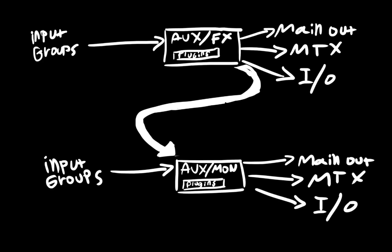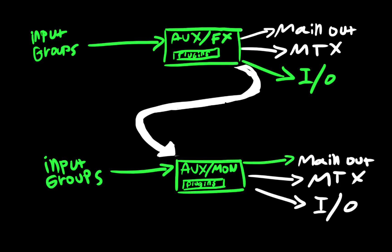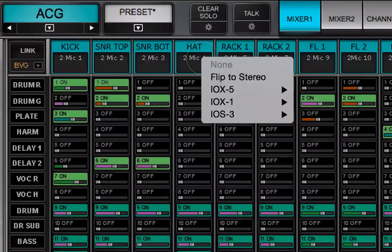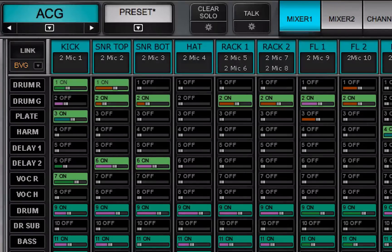The difference is that any aux effects channel can be sent to an aux monitor channel. This means that processing performed on one aux effects channel can be used on several monitor auxes. You can, of course, use aux effects buses for monitor outputs, just like aux monitors. And you can route an aux monitor to a main mix output rather than to a monitor I/O. Aux buses can be stereo or mono. Click on the channel input section at the top of the channel strip to flip between the two. Aux channels are discussed in detail in Lesson 3.6.